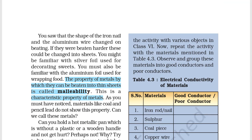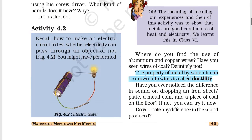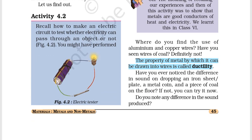The first property is the property of metal by which it can be beaten into thin sheets — it is called malleability. So if any metal has been beaten into thin sheets, that is called malleability. The property of metal by which it can be drawn into wires is called ductility.